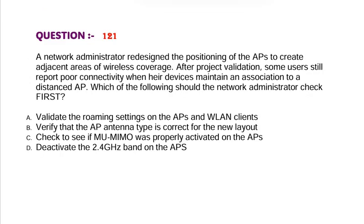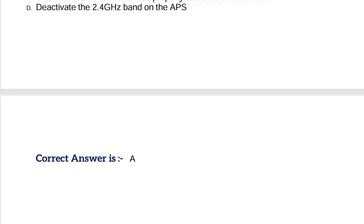Question: A network administrator redesigned the positioning of the APs to create adjacent areas of wireless coverage. After project validation, some users still report poor connectivity when their devices maintain an association to a distanced AP. Which of the following should the network administrator check first? Option A, Validate the roaming settings on the APs and WLAN clients. Option B, Verify that the AP antenna type is correct for the new layout. Option C, Check to see if MU-MIMO was properly activated on the APs. Option D, Deactivate the 2.4 GHz band on the APs. Correct answer is Option A.